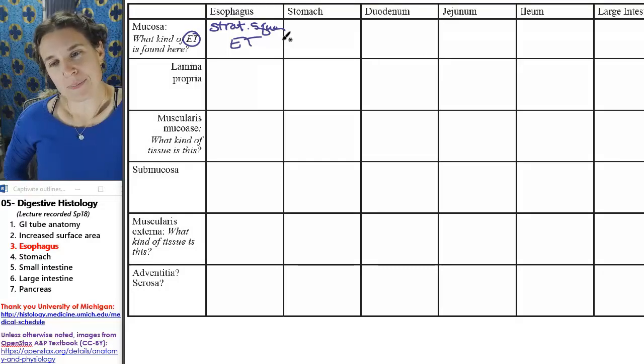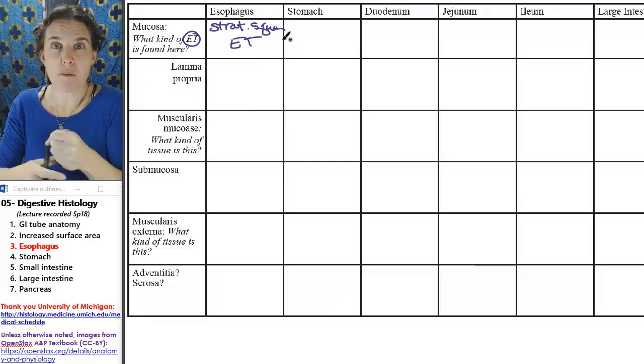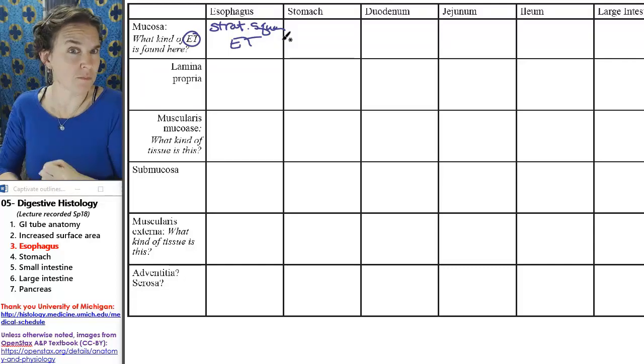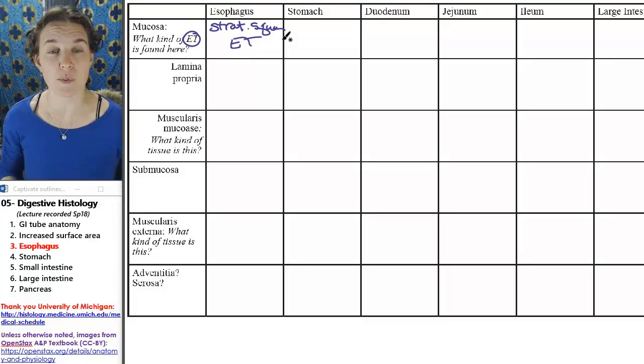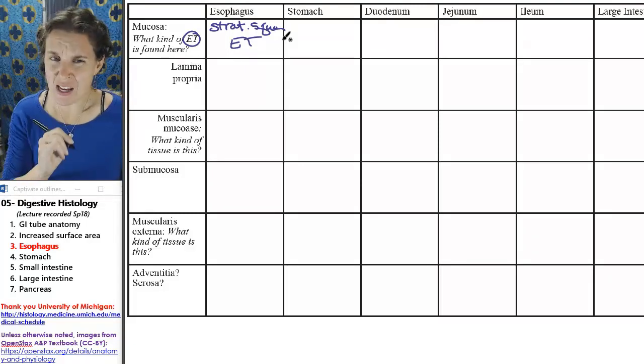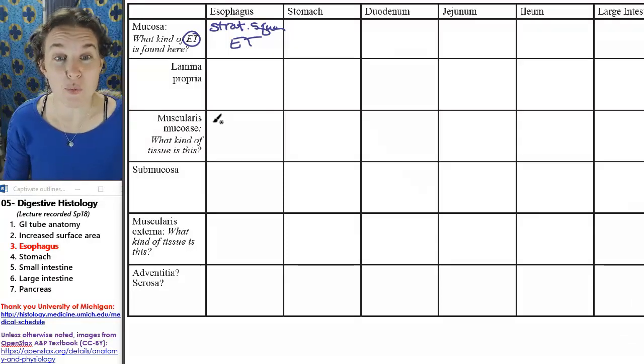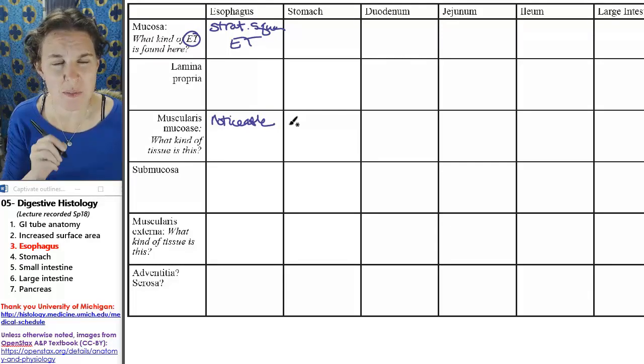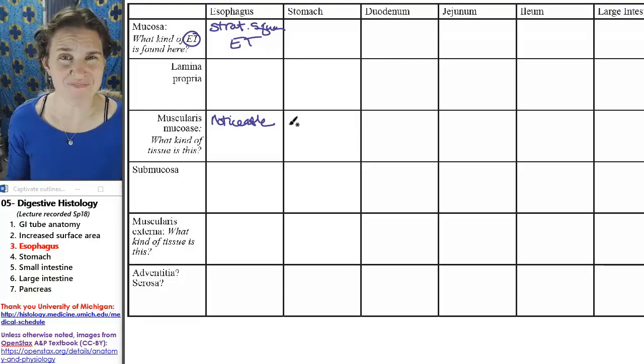Think about the function of the esophagus. It pretty much does nothing more than pass food from the pharynx to the belly zone. You're probably going to want some decent muscle to go through the process of motility. Peristalsis is the process of moving food through the tube. I'm not sure we're going to see anything significant in the lamina propria. Muscularis mucosa is probably noticeable.